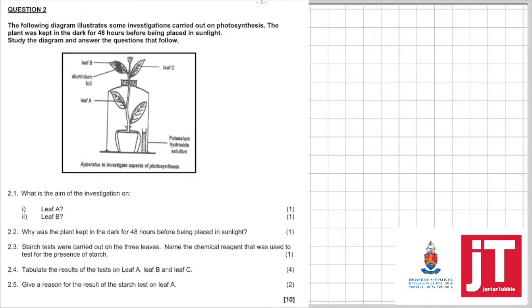Question two has five parts from 2.1 to 2.5 and is 10 marks. The following diagram illustrates some investigations carried out on photosynthesis. The plant was kept in the dark for 48 hours before being placed in sunlight. Study the diagram and answer the question below.